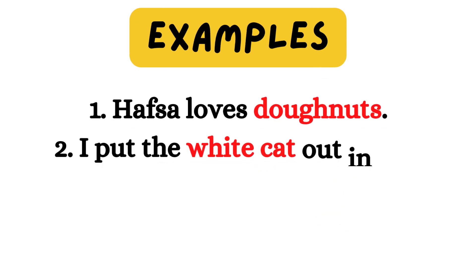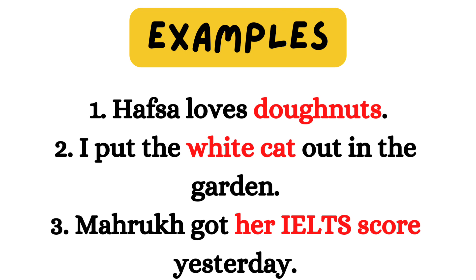Take a look at more examples so you can understand easily. Hafsa loves donuts — donut is the object because Hafsa loves what? Donut. Donut is the receiver of an action. Next: I put the white cat out in the garden. I put what out in the garden? The answer is white cat — white cat is the object here. Maruk got her IELTS score yesterday. Maruk got what? The object is her IELTS score.